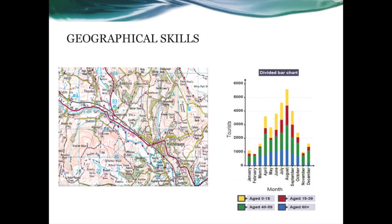Human geography focuses on the development of cities in both the developing world and the developed world. Rural landscapes in both these areas are focused on too. Numeracy in human geography is developed by analysing population growth and change in a variety of countries using charts like the one shown on the screen. In both physical and human geography, pupils will learn how to read ordnance survey maps and graphs. Interpreting information from these sources is a key part of being a success.